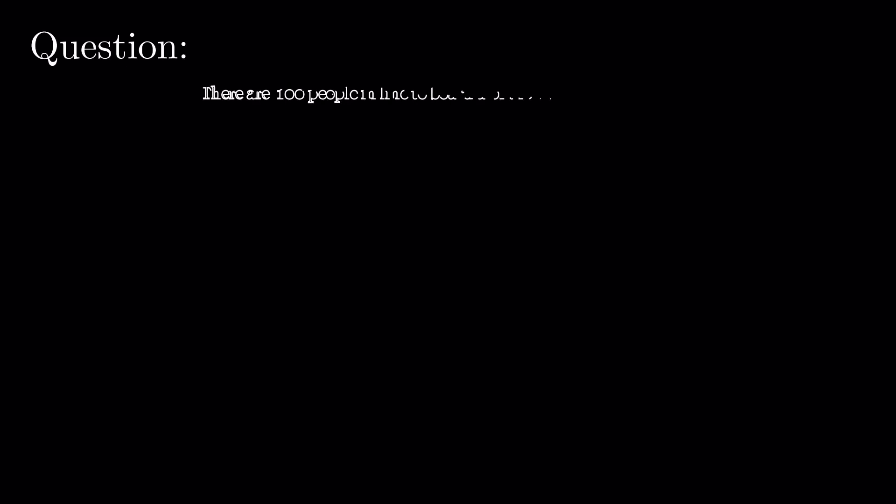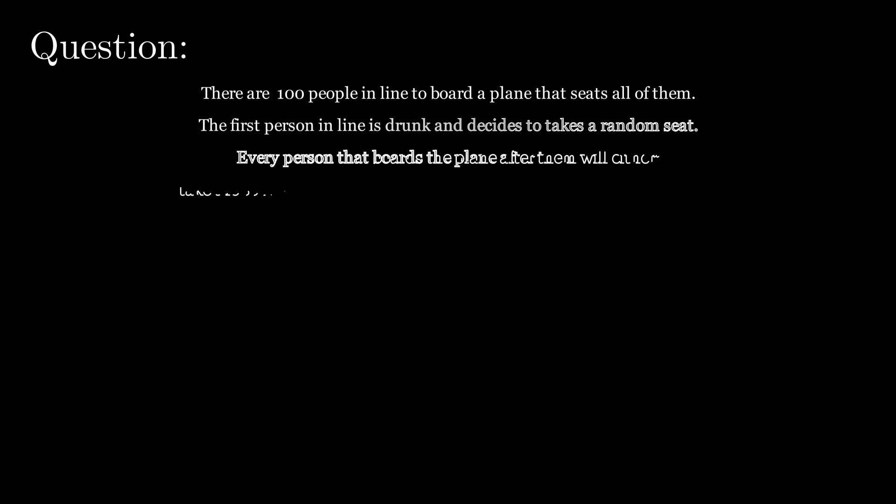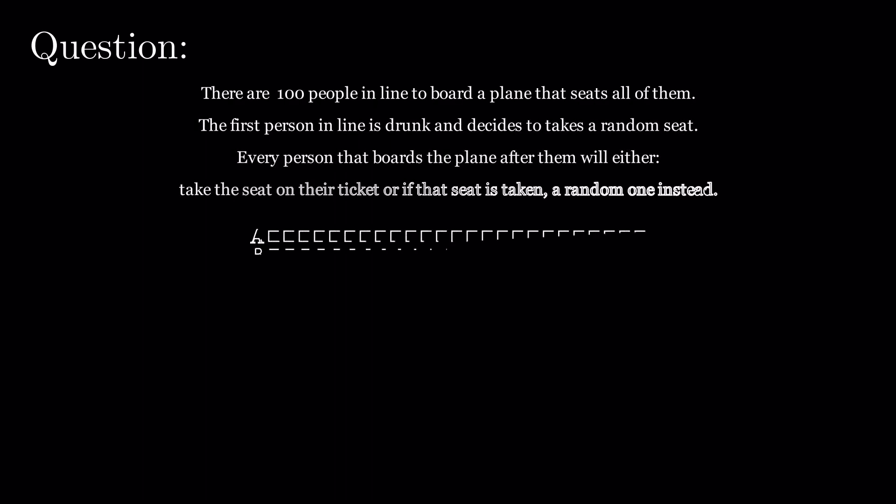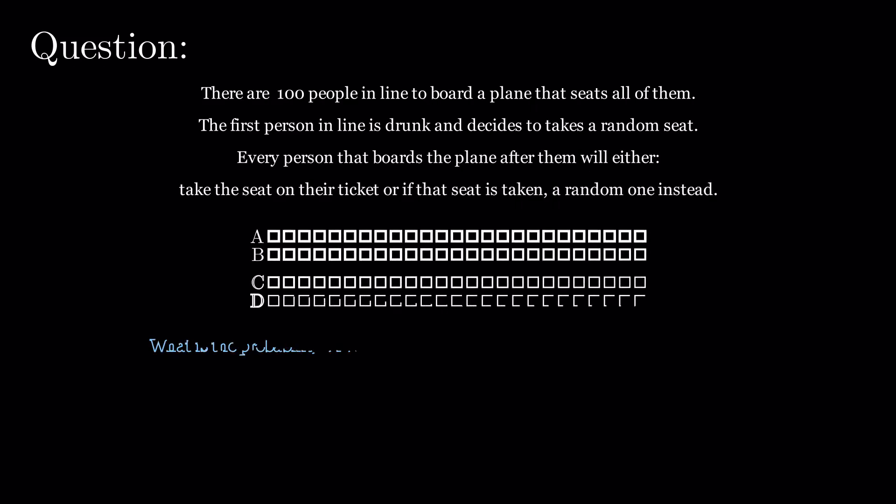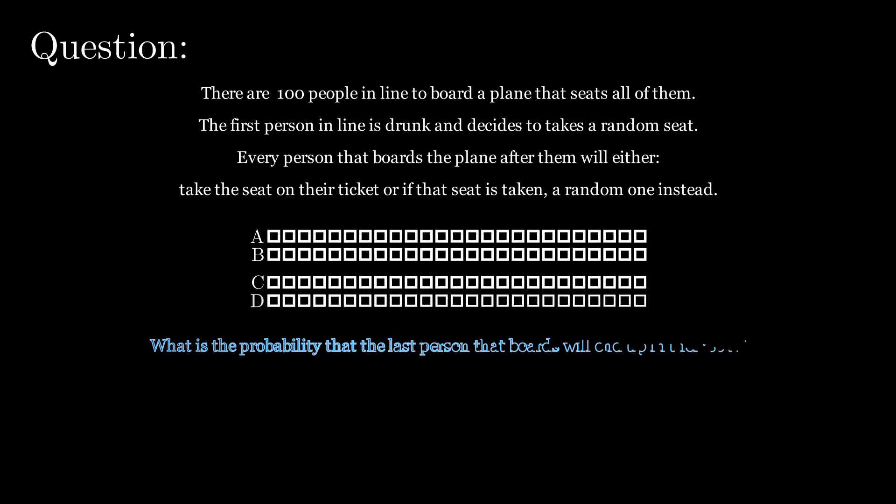There are a hundred people in line to board a plane that seats all of them. The first person in line is drunk and decides to take a random seat. Every person that boards the plane after them will either take the seat on their ticket or, if that seat is taken, a random one instead. What is the probability that the last person that boards will end up in their assigned seat?